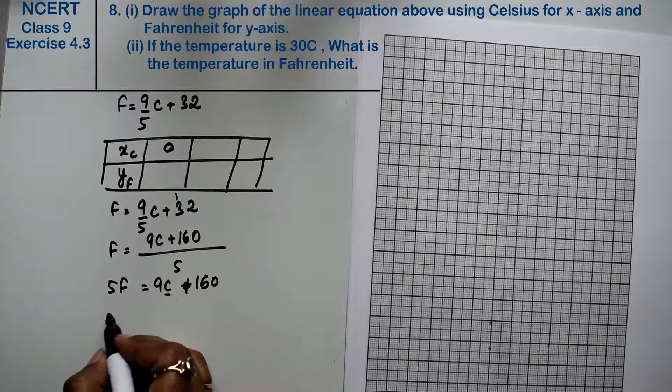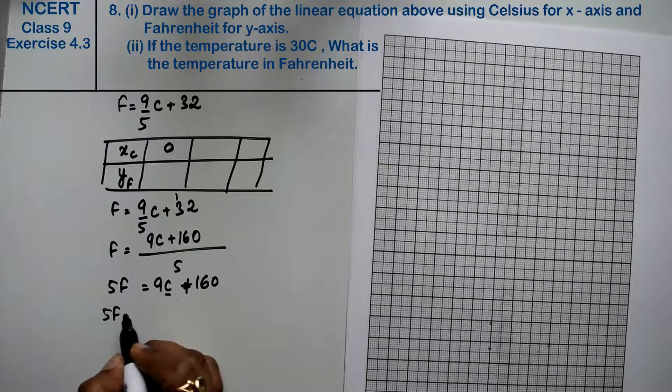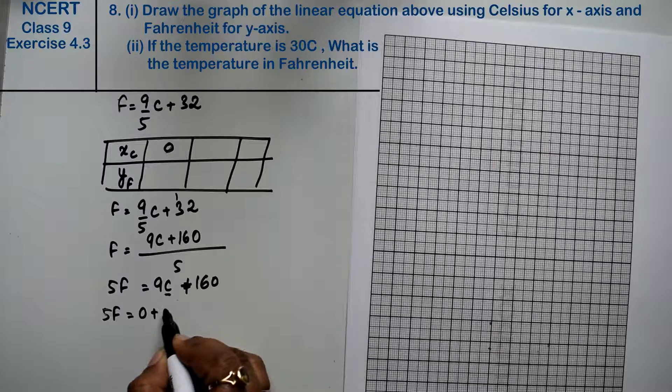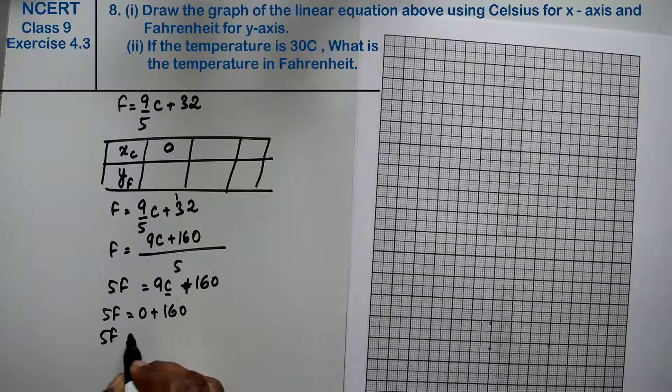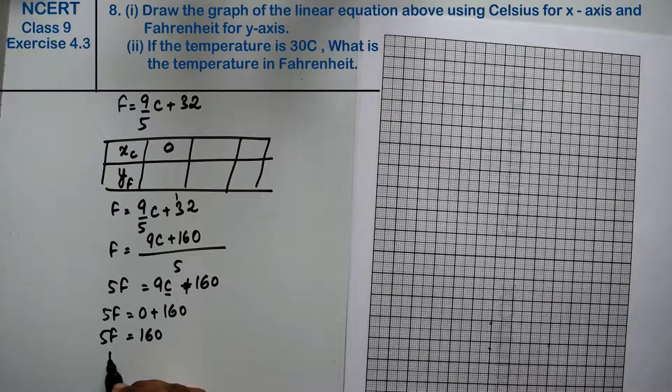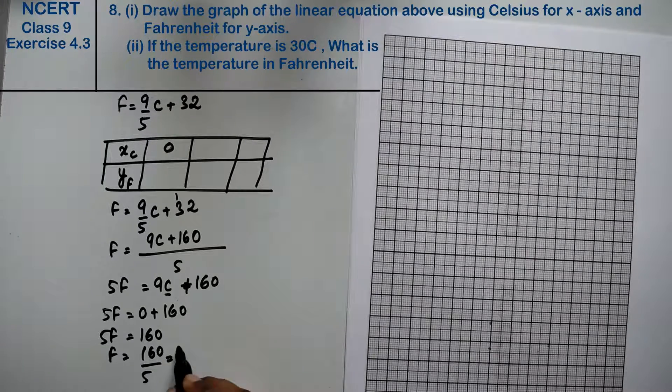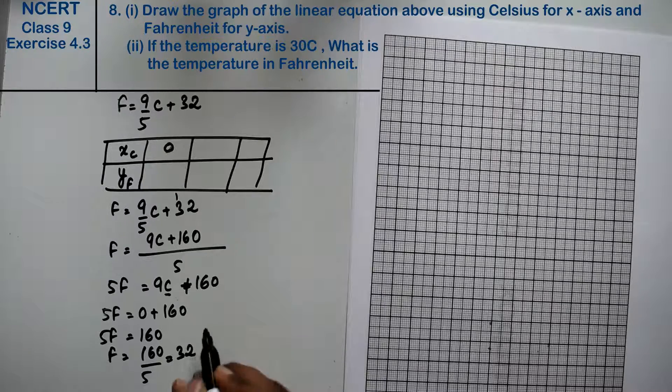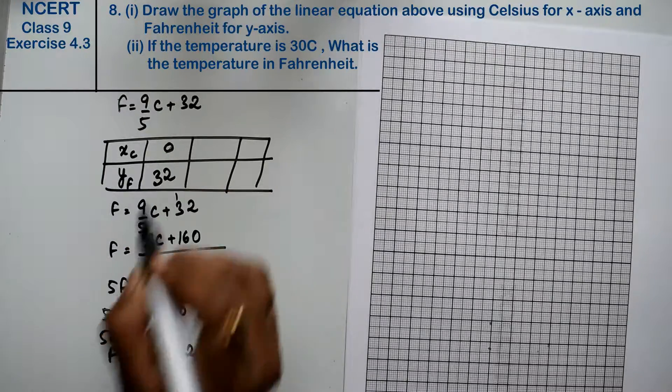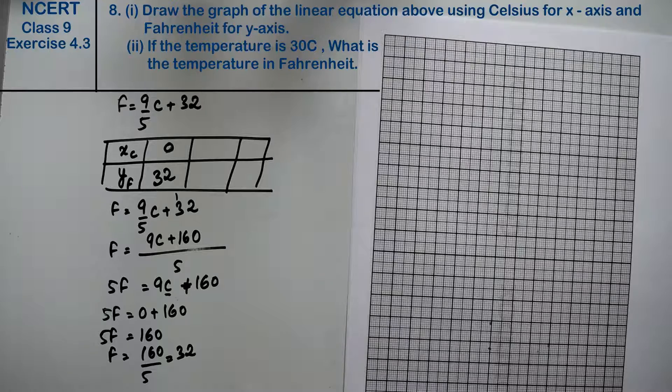So how much will it be? If I put C equals 0 in the equation, 5F equals 0 plus 160. So F equals 160 divided by 5, that is 32. Right, friends.